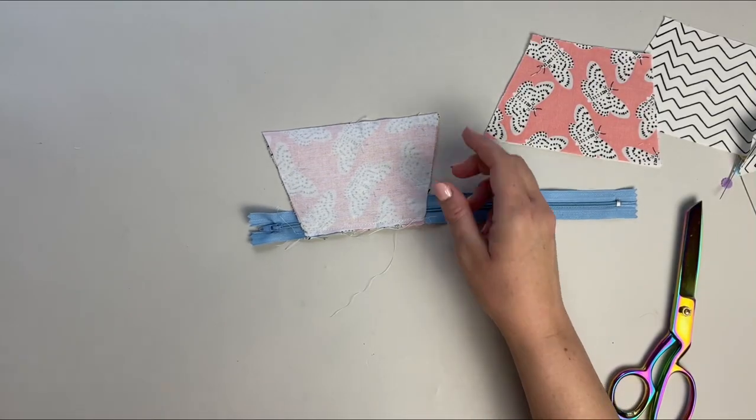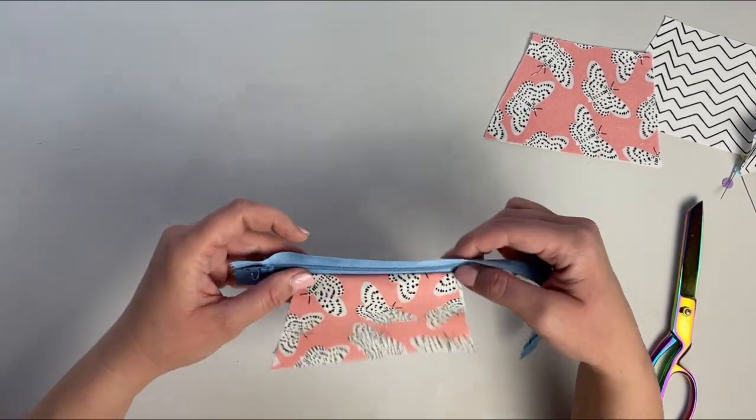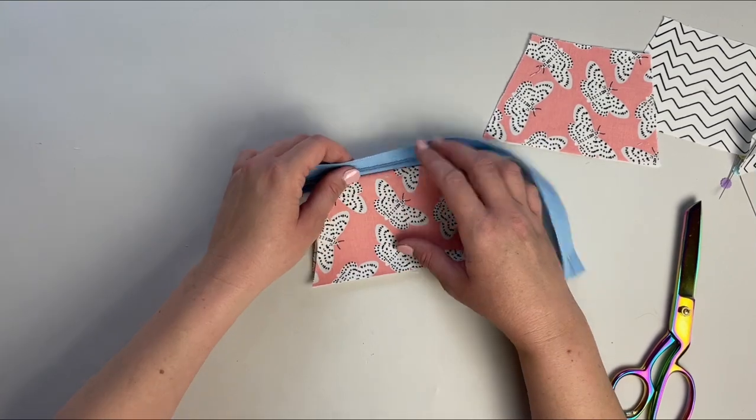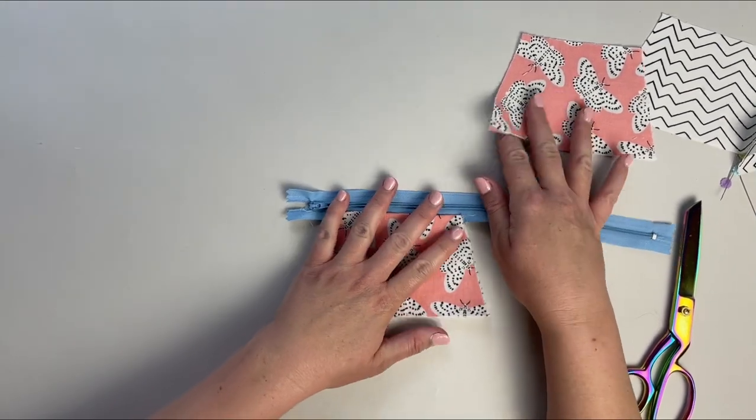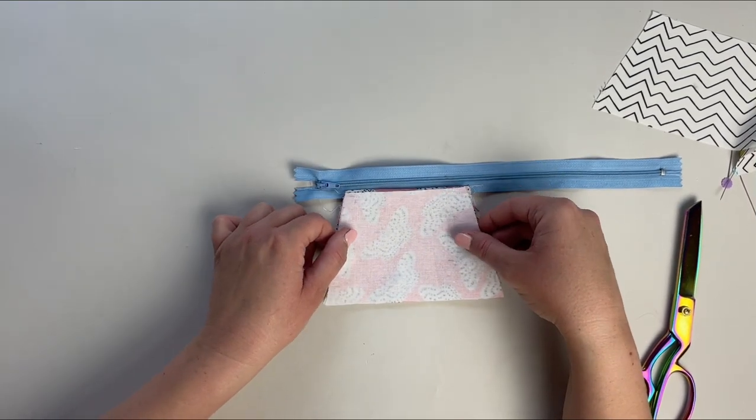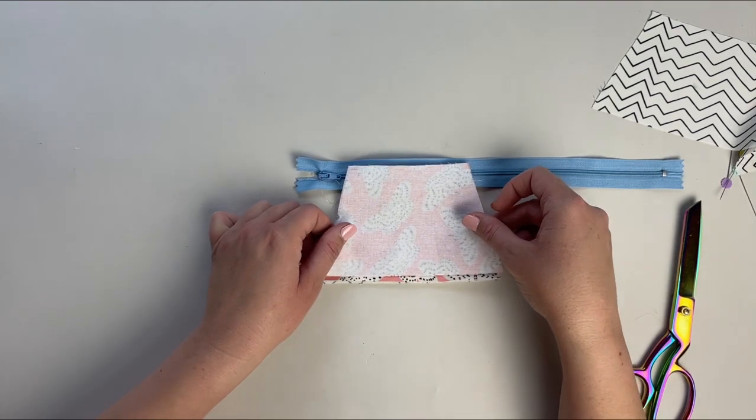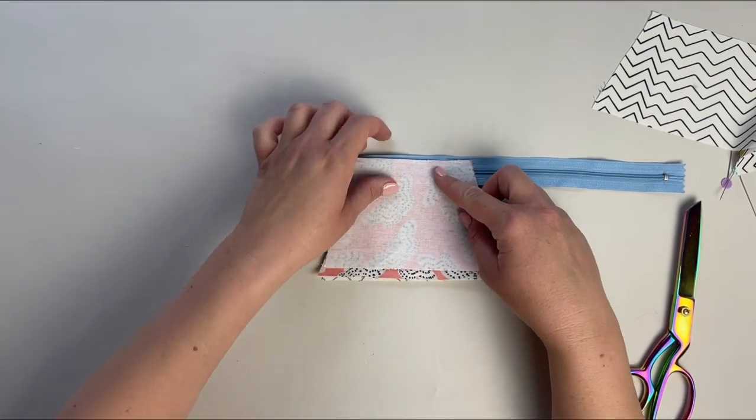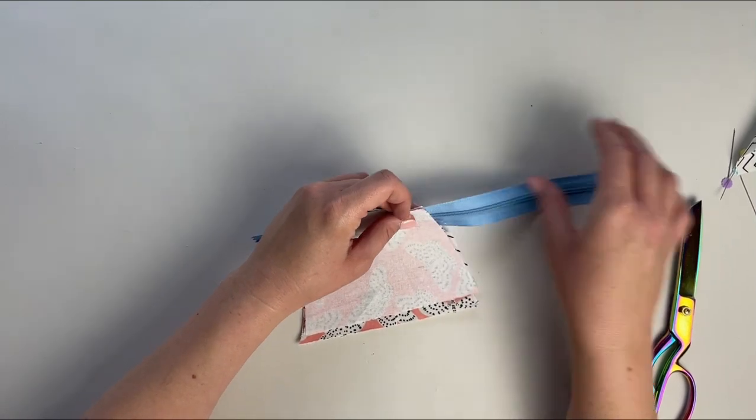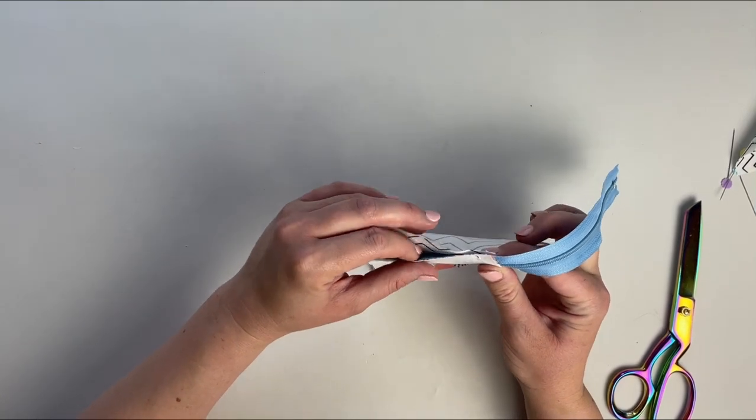After you've sewn that, we're going to open the pouch up and fold the main and lining down. Then we'll do the same thing on the other side. First we're going to line up the main fabric so that it is at the zipper teeth, the same spot so the top of the pouch lines up. Then we'll put the lining behind it again. Pin that in place and stitch it up the same way you did the first one.